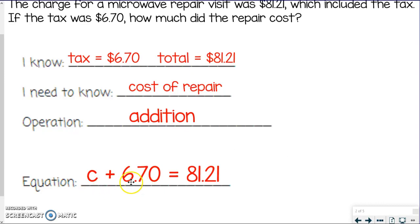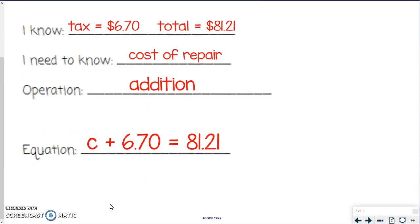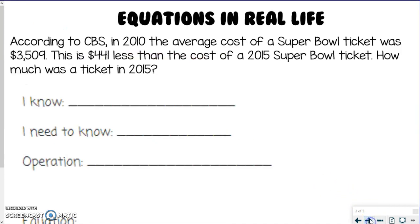You could flip these because you could do the tax plus the repair — either way, it doesn't really matter. You can have a different variable, and you can even have the total equals first. But you do need to have the variable plus $6.70 on one side equaling the $81.21 on the other side. When we go to solve this to find that missing piece, we would subtract the $6.70 on both sides. But the equation representing this problem uses addition because you're taking the cost of the repair plus the tax to equal the total. Feel free to rewind and go back if needed, but make sure you're getting all your blanks filled in.